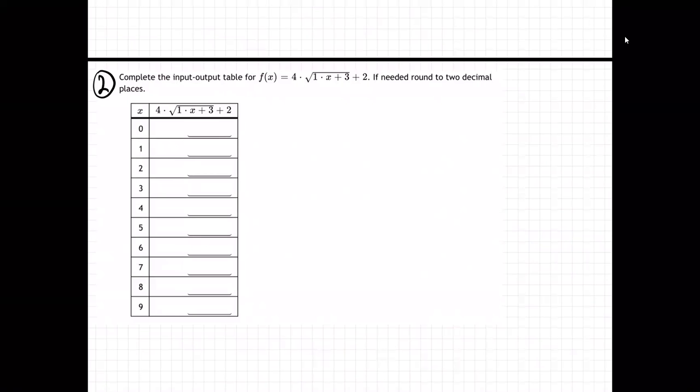So on this one, we're trying to plug in, but the function is a little more complex this time. The function that we're plugging into is 4 times the square root of 1 times x plus 3, that's all under the square root, and then plus 2 at the end. So that's what we're plugging into every time.